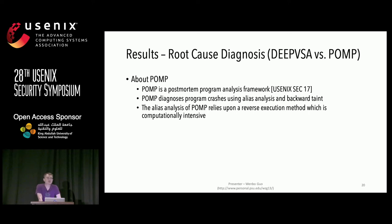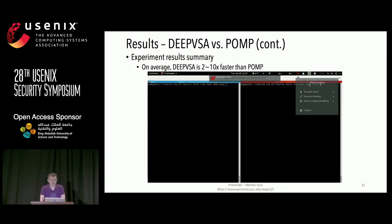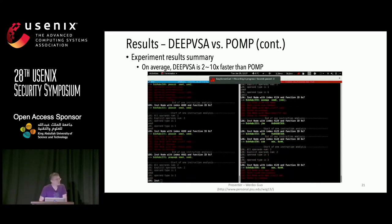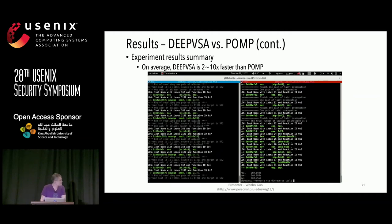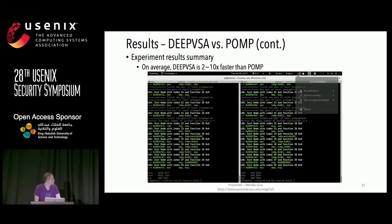Last but not least, I compare DeepVSA with POMP. POMP also diagnoses program crashes using alias analysis and backward taint. Specifically, it utilizes a reverse execution approach to analyze alias relationships, which is computationally intensive. Here is a video demonstrating the speed difference. The screen on the right-hand side is DeepVSA and the left-hand side is POMP. After nine seconds, DeepVSA finished diagnosis and POMP is still running. After about 19 seconds, POMP finished. On average, DeepVSA is 2 to 10 times faster than POMP.